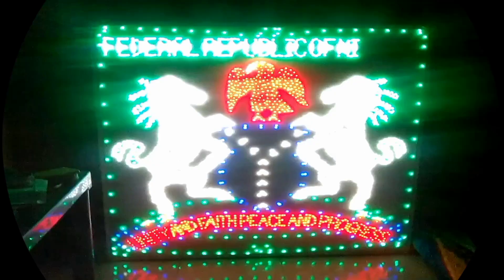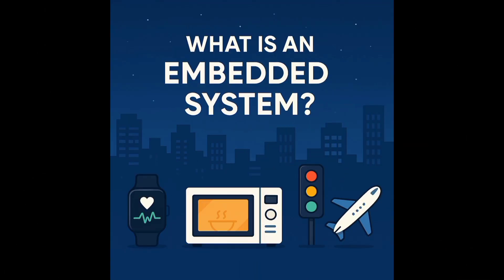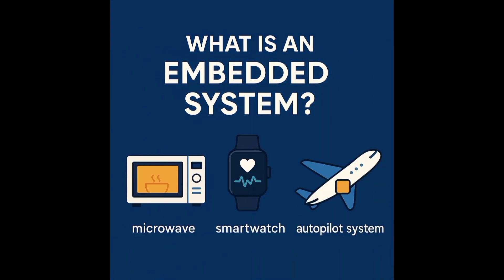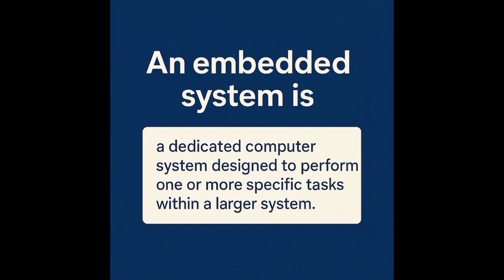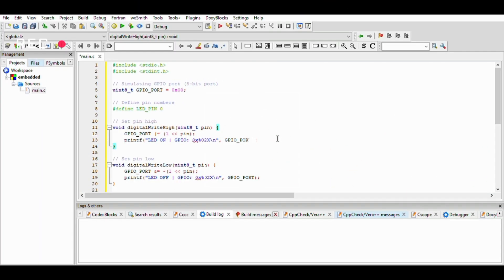I'll walk you through the full roadmap to embedded systems. What exactly is an embedded system? An embedded system is a dedicated computer system designed to perform one or more specific tasks within a larger system. So any system that has a chip on it can be regarded as an embedded system.